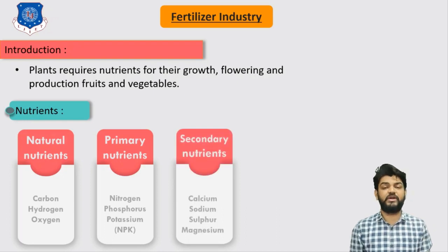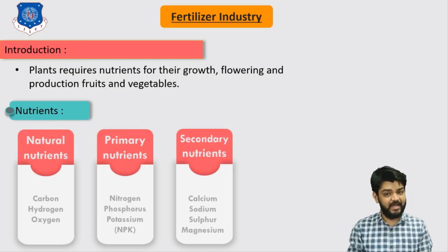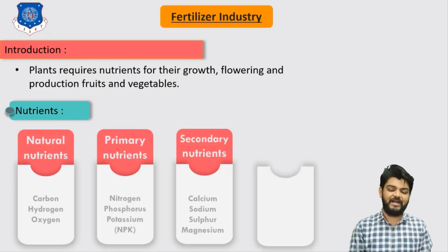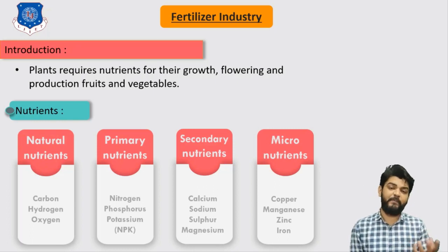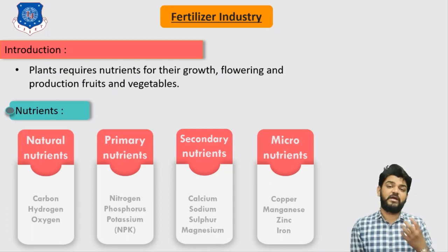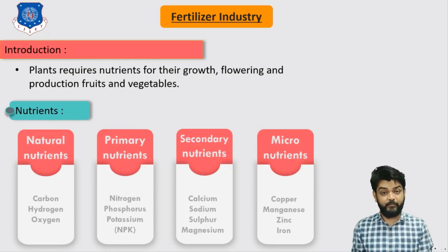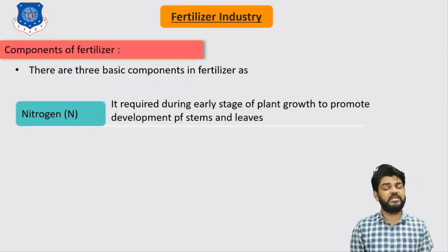The next type is secondary nutrients, which are calcium, sodium, sulfur, and magnesium ions — these are required for plant growth. Lastly, we have the fourth category: micronutrients, which are different metals such as copper, zinc, iron, and manganese. These are all the types of nutrients required for the growth of plant material, fruits, and vegetables. Now let's understand what the different components of a fertilizer are.